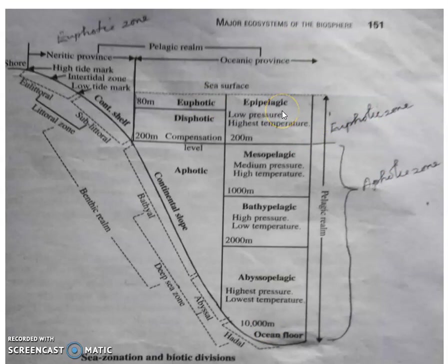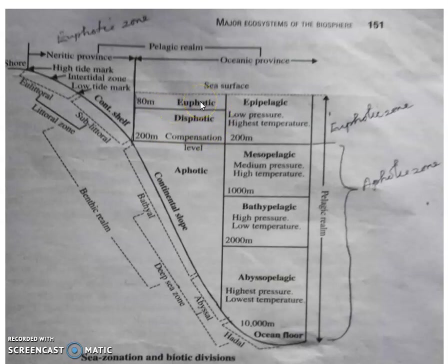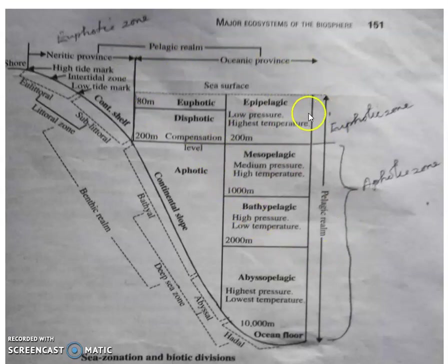Within the epipelagic zone, autotrophic plants can grow because light passes through that region. Up to 80 meters it is called the euphotic zone, and from 80 to 200 meters it is called the dysphotic zone. In the euphotic zone maximum light energy is present, while in the dysphotic zone only a limited amount of light is present. The pelagic realm thus contains the neritic province and the oceanic province with its zones: epipelagic, mesopelagic, bathypelagic, and abyssopelagic.